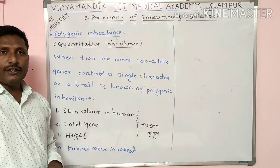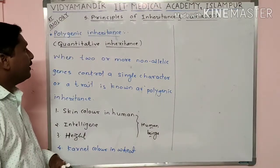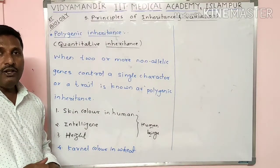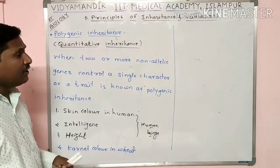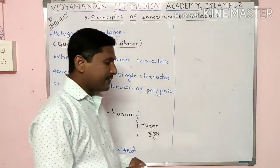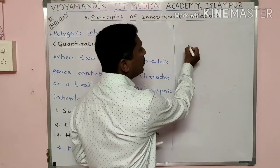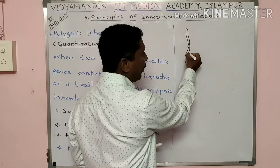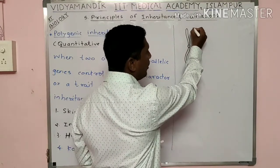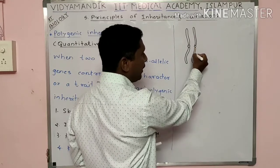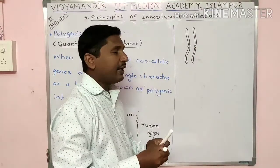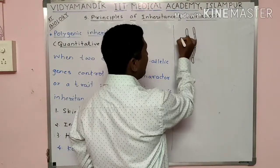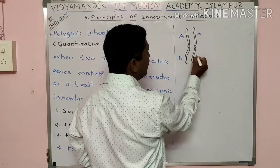Polygenic inheritance or quantitative inheritance is one of the non-allelic gene interactions. Non-allelic genes are those genes present on different chromosomes at different loci, on non-homologous chromosomes.